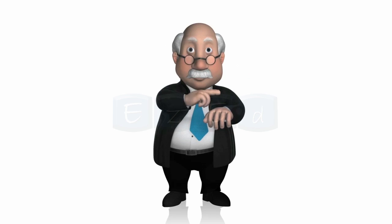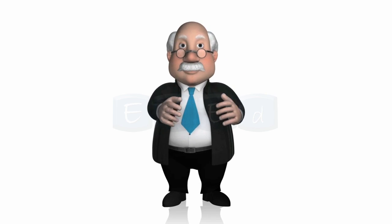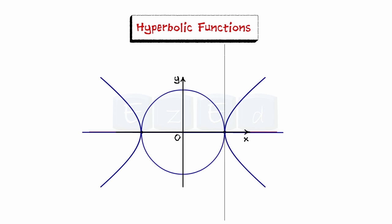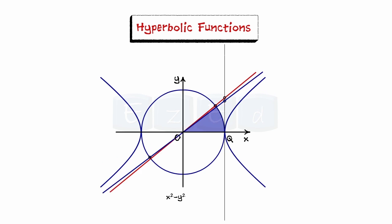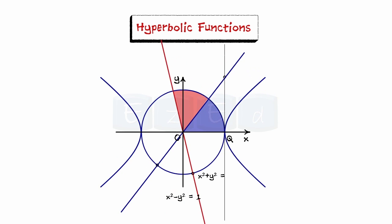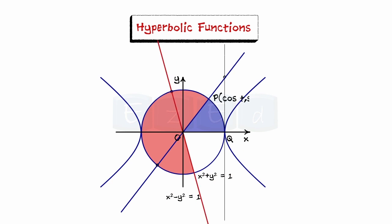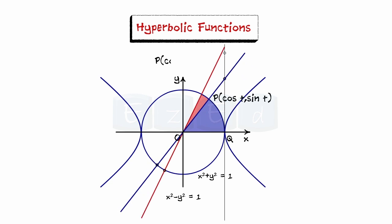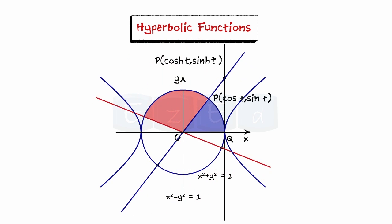You must be wondering why hyperbolic functions are called so. The identity cosh²x − sinh²x = 1 gives a clue. Just as the points (cos t, sin t) form a circle with unit radius, the points (cosh t, sinh t) form the right half of the equilateral hyperbola.